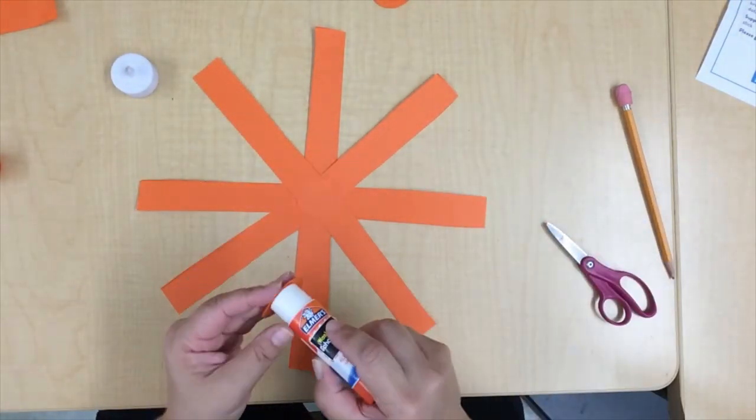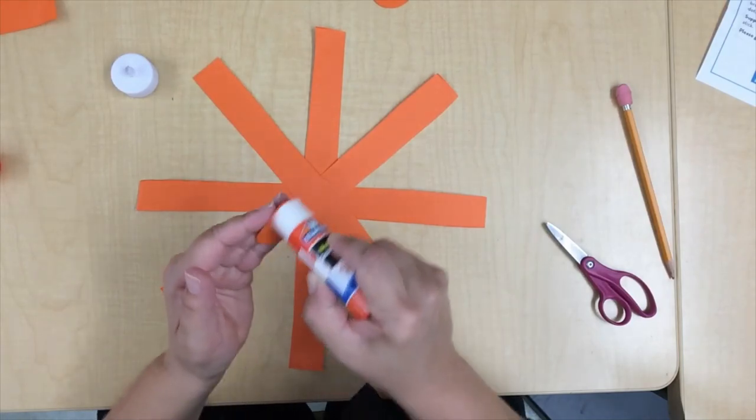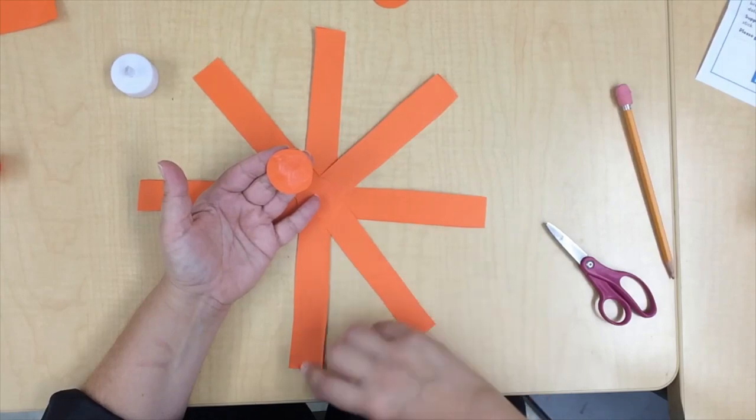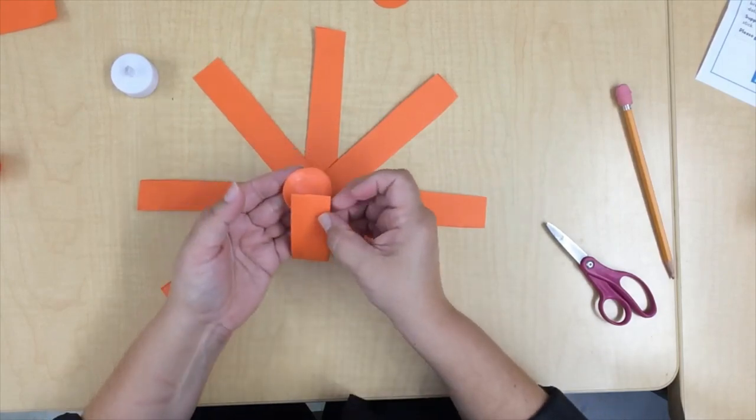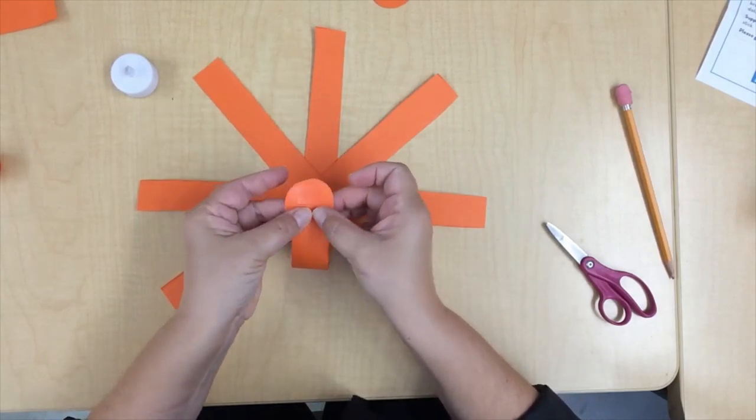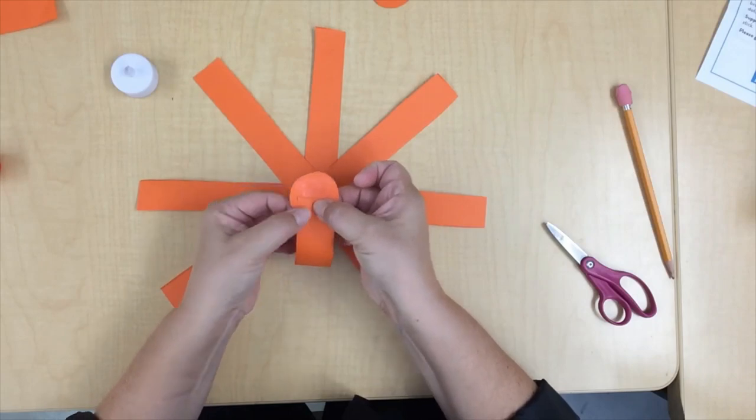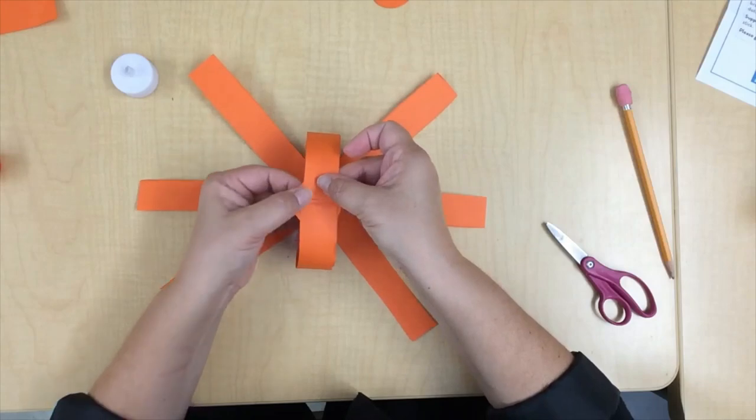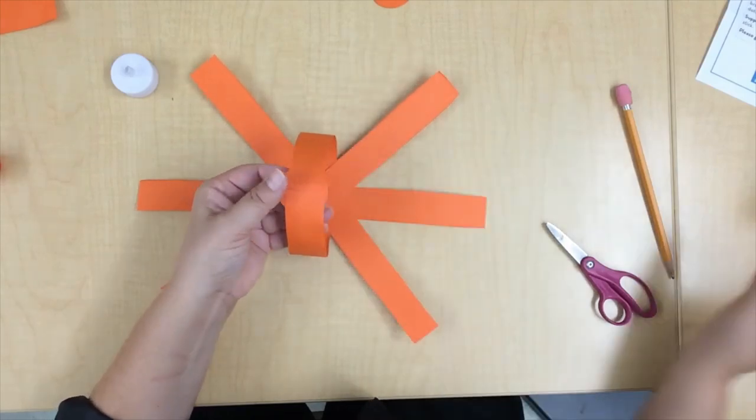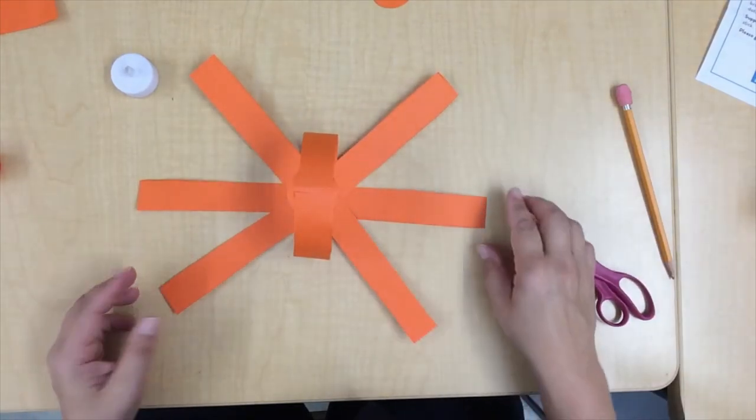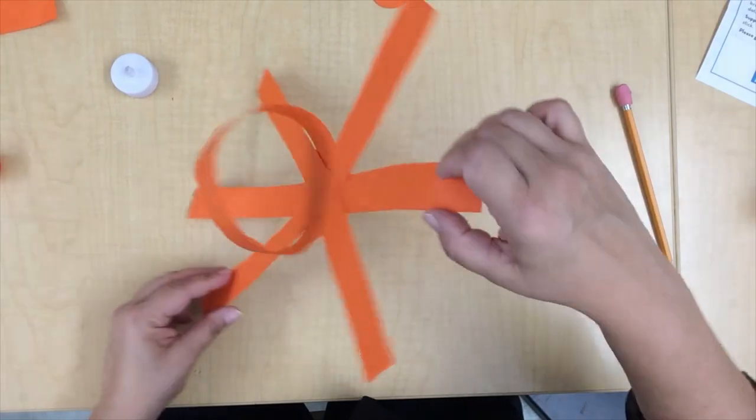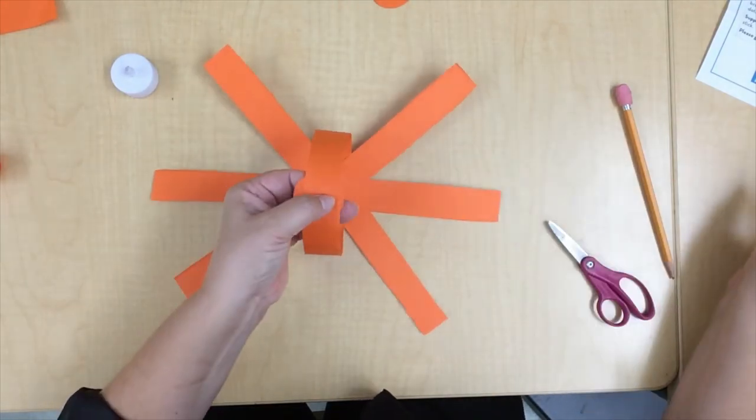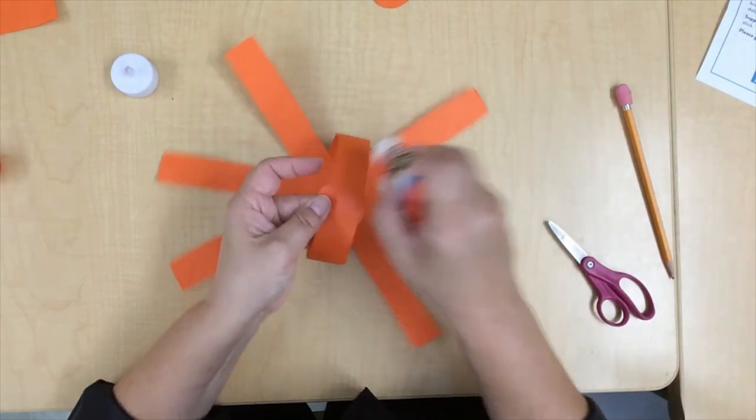Now we are going to take our other circle and put some glue on it. Now we're going to bring each one of these up to that circle. See how it is making a little circle? And we can put some more glue on.